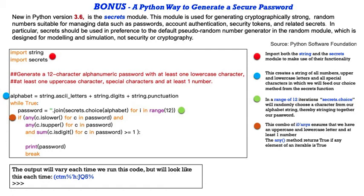So let's go through this at a high level. First, we have to import both the string and the secrets module to make use of their functionality later in this code. This code, much like our other one, is going to generate a 12-character password with at least one lowercase, one uppercase, a special character, and at least one number. So here, let's start at the blue dot. This blue dot is a variable. This creates a string of all the numbers, uppercase, lowercase, and all special characters in which we will feed our choice method from the secrets function. Okay, so this is courtesy of the string module. You see how these are all prefaced with string dot. Okay? Then we have a while loop. In a range of 12 iterations, the green dot, secrets dot choice will randomly choose a character from our alphabet string, thereby stringing together our password. But we're not done yet.